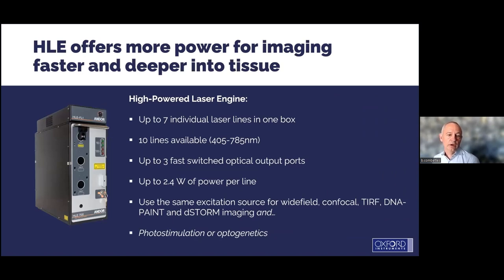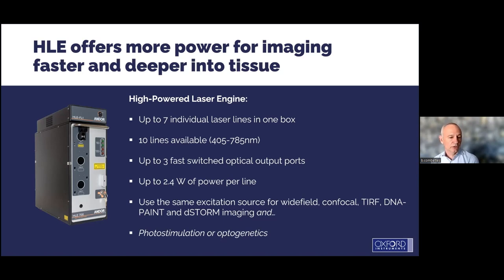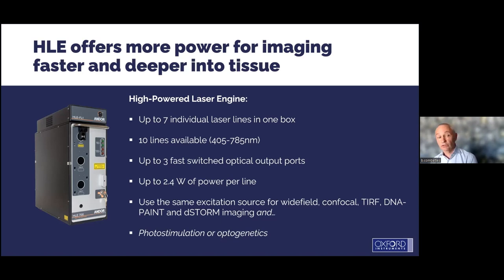The new laser box can have up to seven individual lasers. The power of each laser can be chosen between 1, 2, and even up to 2.5 watts per line. We cover the whole range from UV 405 up to near-infrared 785 nanometers — a very broad range, ideal for any multiplex approach like transcriptomics or proteomics where many different lines are needed. We have different output ports for photoactivation, FRAP, or imaging, all covered by one box.